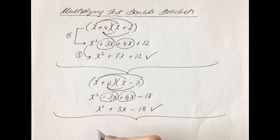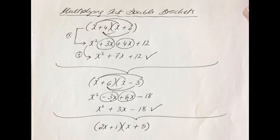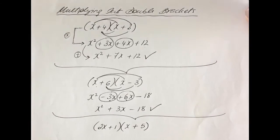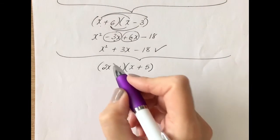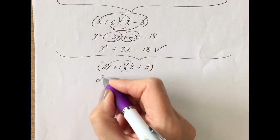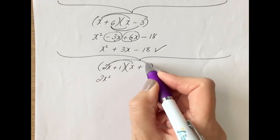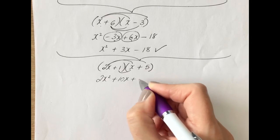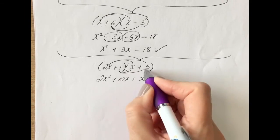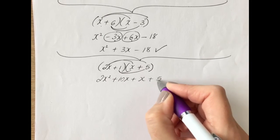Try this question. Say you had 2x plus 1 in one bracket and x plus 5 in the other. Pause the video and see how you get on with this. So 2x by x is 2x squared. 2x by 5 is 10x. 1 by x is 1x or just x, and 1 times 5 is 5.